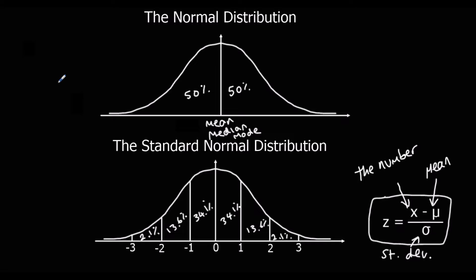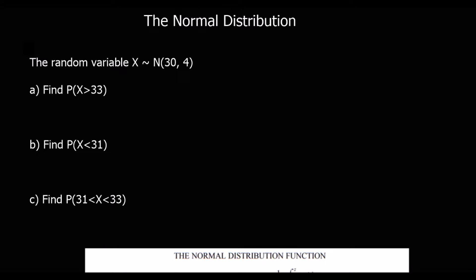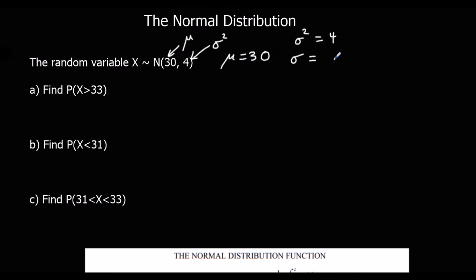Let's look at some questions. The random variable x — the squiggly line means 'distributed', and N means 'normally' — so x is distributed normally. The first number is the mean and the second number is the variance. So we know the mean is 30 and the variance is 4, which means the standard deviation must be the square root of 4, which is 2.